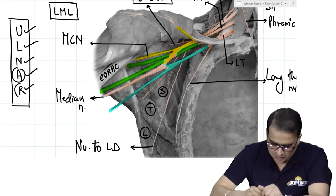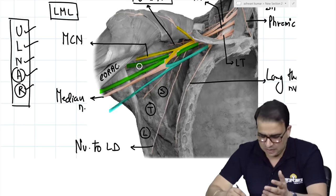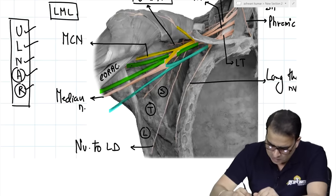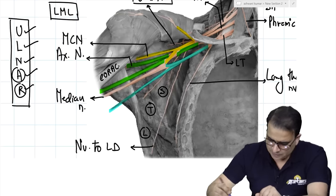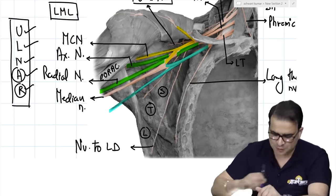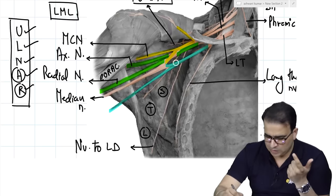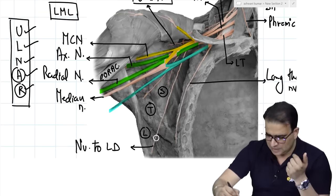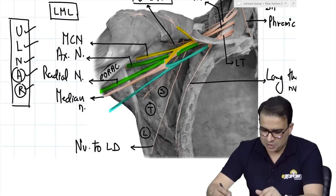The two most important nerves from the posterior cord are the axillary nerve and the radial nerve. The axillary nerve goes through the quadrangular space along with the posterior circumflex humeral vessels. It is very easily identifiable in the brachial plexus picture. The radial nerve — the longest nerve of the upper limb — is the main continuation of the posterior cord, supplying the extensor compartment. So the five branches of the posterior cord are: upper subscapular, lower subscapular, nerve to latissimus dorsi (thoracodorsal), axillary, and radial nerve.